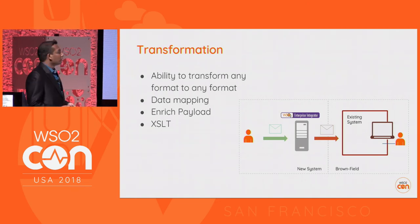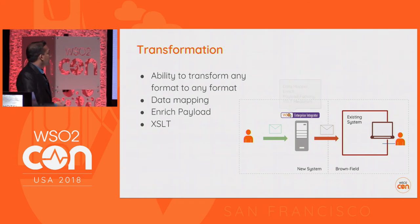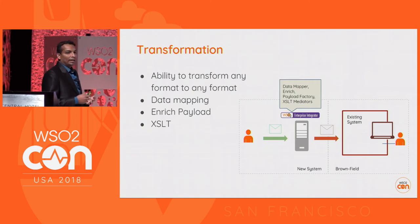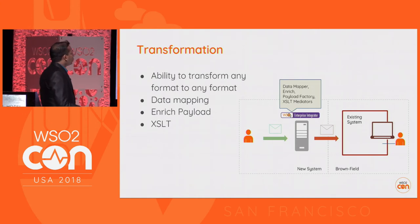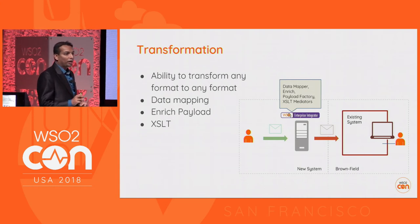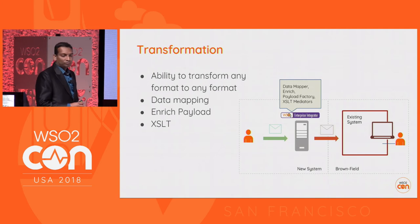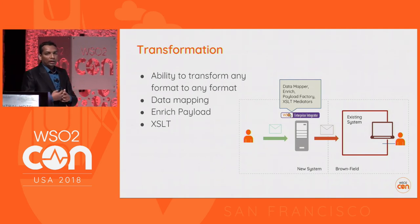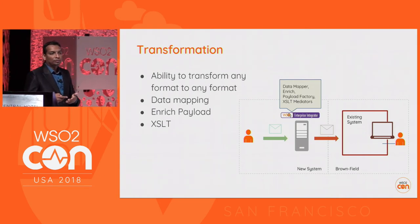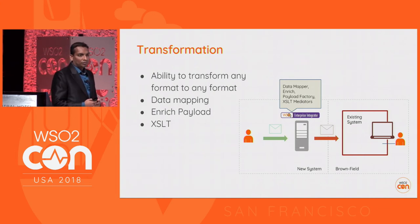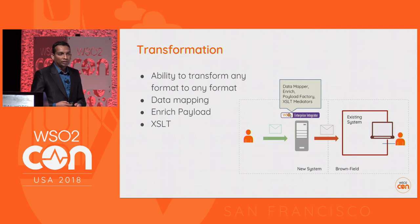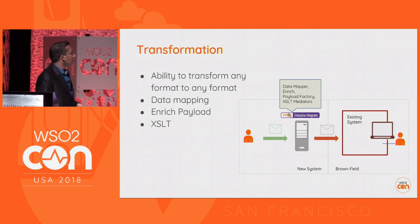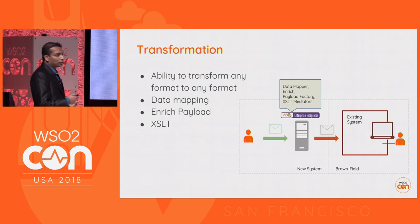The unit of message processing in Enterprise Integrator is called a mediator. To do transformation, we have a set of mediators. To visually data-map from an input message to an output message, we have a mediator called the Data Mapper. To alter a particular segment of a message, we use the Enrich mediator. To create an entirely new payload structure, we can use the Payload Factory mediator with parameterized values. For advanced transformations, we can write an XSLT script and plug it into the ESB runtime using the XSLT mediator.